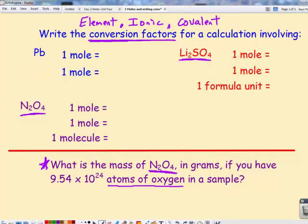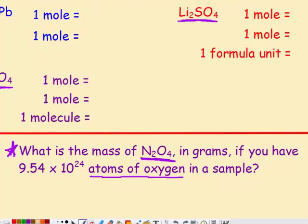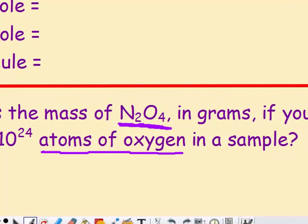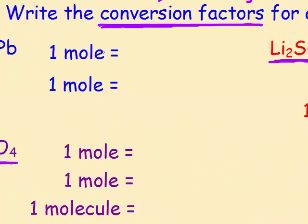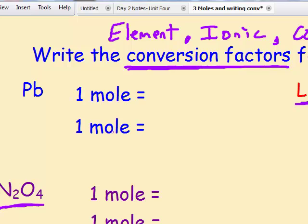There are two conversion factors that we can write for an element such as this. The first one would always be one mole equals. And one mole would equal the molar mass. Now this is just Pb, so looking at my periodic table, I see I have 207 grams according to the periodic table equal to one mole, 207 grams per mole.